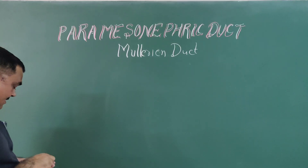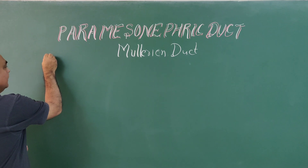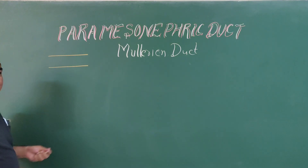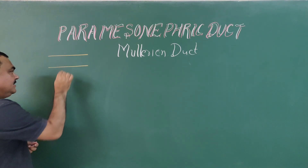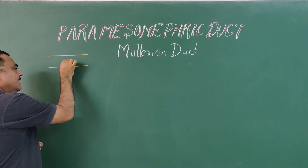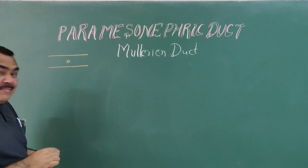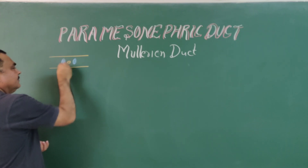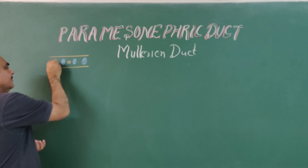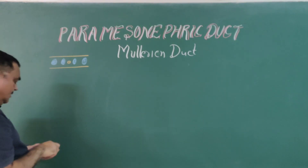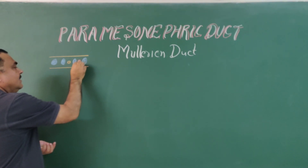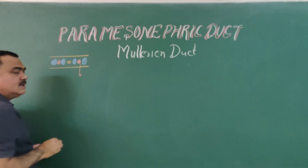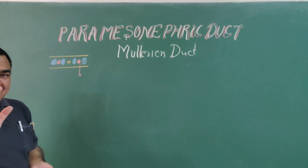In previous lectures, you have seen ectodermal lining and endodermal lining. Between ectoderm and endoderm, there is mesoderm. This mesoderm, with the notochord, divides into paraxial mesoderm, lateral plate mesoderm, and in between these two there is intermediate mesoderm. This intermediate mesoderm forms the nephrogenic cord.